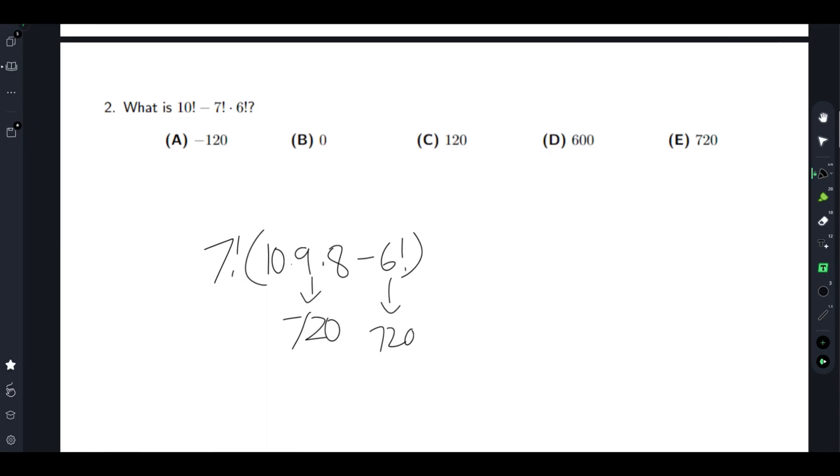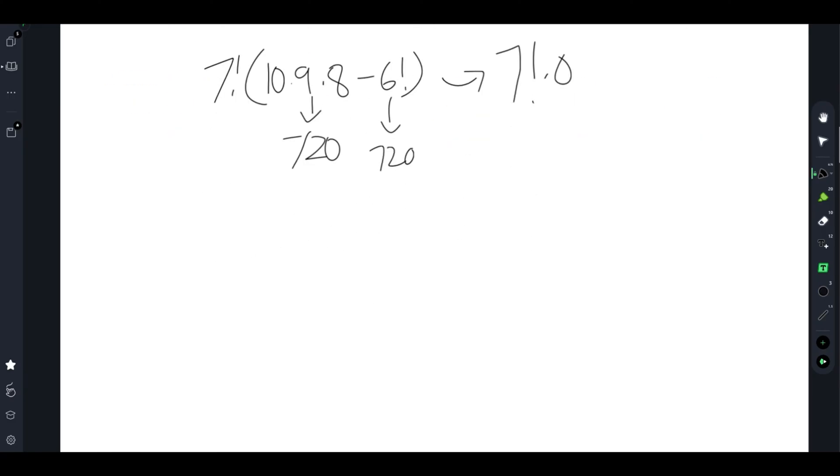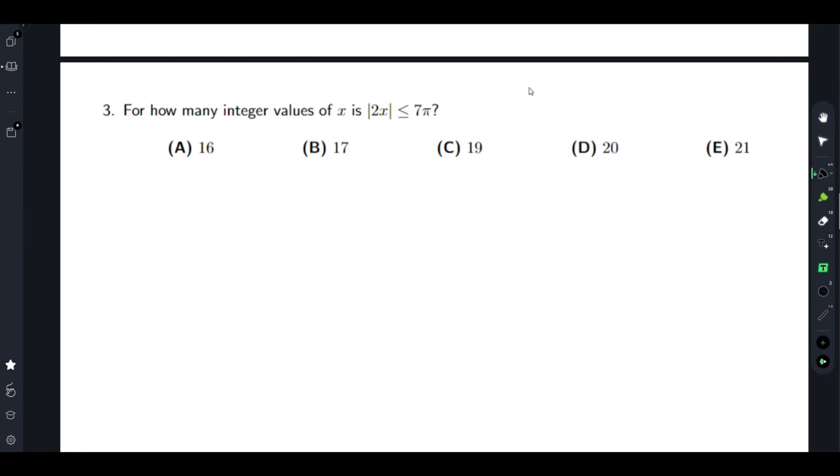How many integer values of x is absolute value of 2x less than or equal to 7 pi? So 7 pi is 3.14 times 7, which is 21.98. So 2x is less than or equal to 21.98, so we get x is equal to 10, 9 down to 1, 0, and then negative because there's absolute values.